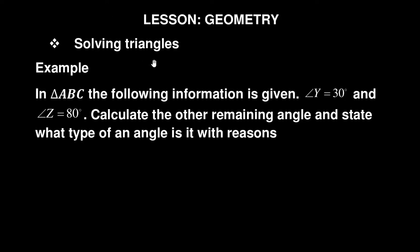Let us look at the example. It says in triangle ABC - whenever you see this sign it means triangle - the following information is given: angle Y equals 30 degrees and angle Z equals 80 degrees. Calculate the other remaining angle and state what type of angle it is with reasons.